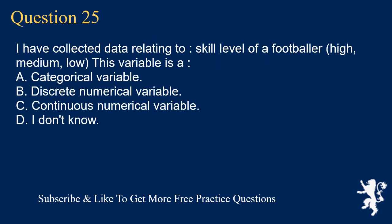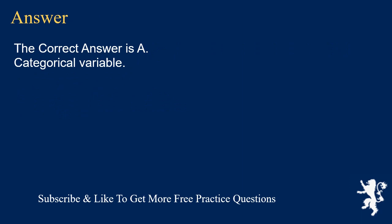Question 25: I have collected data relating to skill level of a footballer — high, medium, low. This variable is A. a categorical variable, B. discrete numerical variable, C. continuous numerical variable, D. I don't know. The correct answer is A, categorical variable.